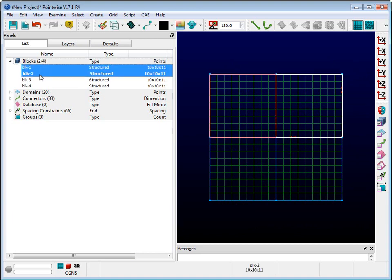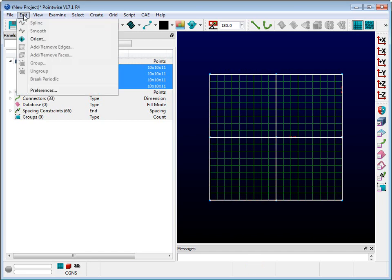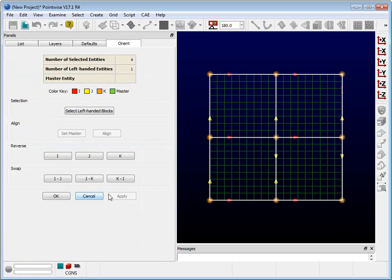Let's investigate. First, select all four blocks, and then go to the Edit menu, and select Orient. On the left side of the screen is an Orient panel. This panel gives a lot of information. For one thing, at the top is a table that tells us that we have a left-handed block. To find out which one it is, you can simply press the button labeled Select Left-Handed Blocks.